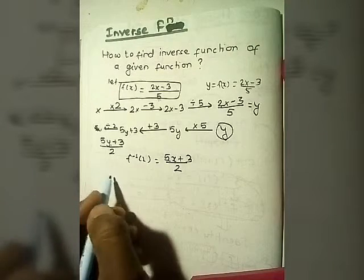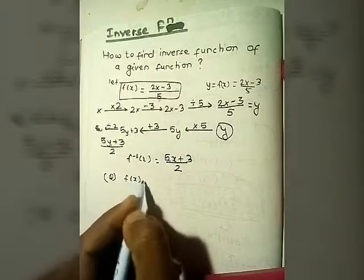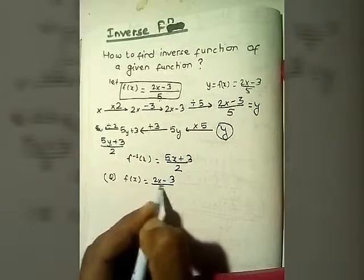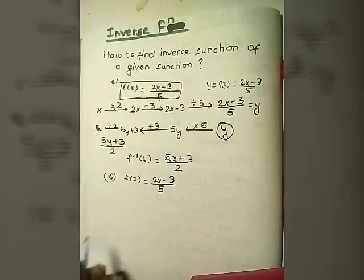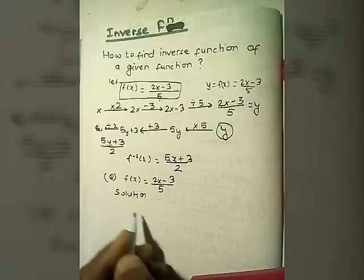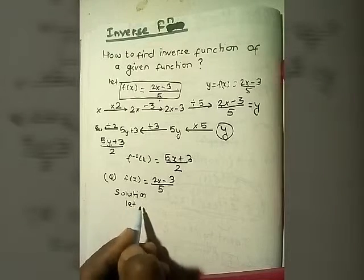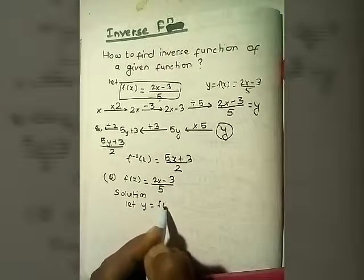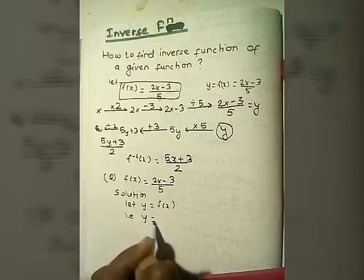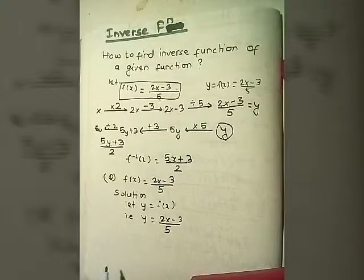Now let me show you the algebraic method formally. We have f of x equals 2x minus 3 divided by 5. In the solution, we let y equal f of x, so y equals 2x minus 3 divided by 5.